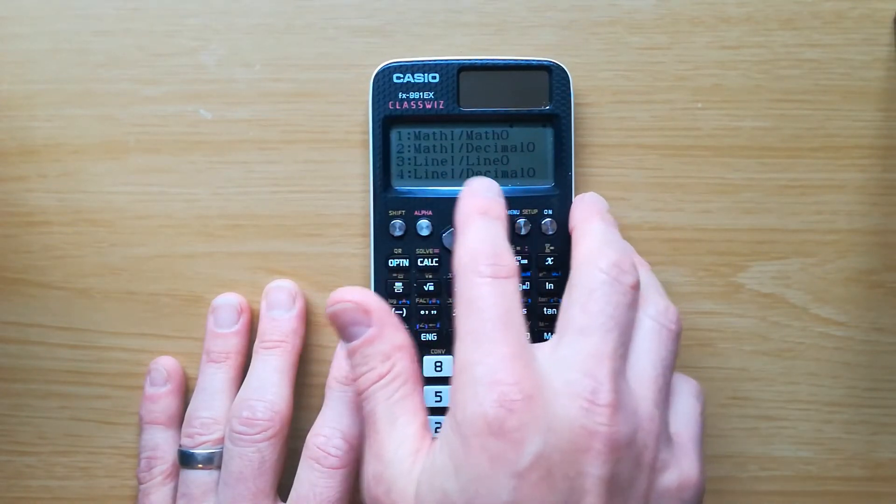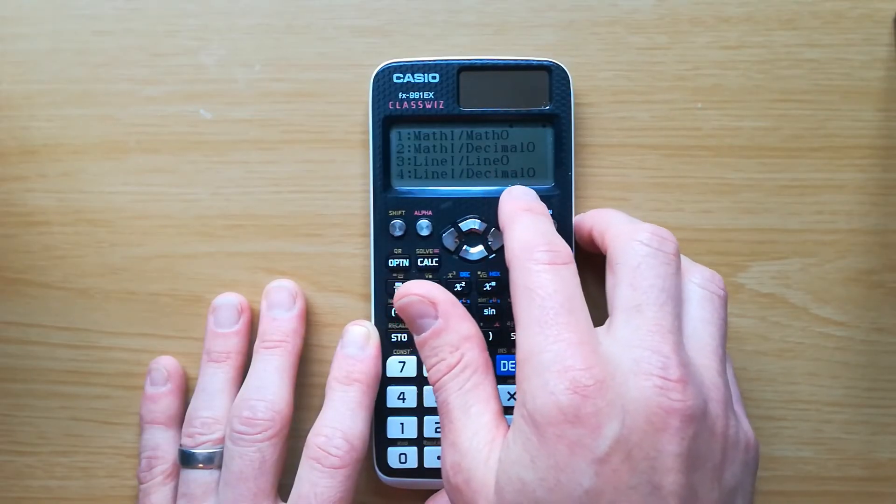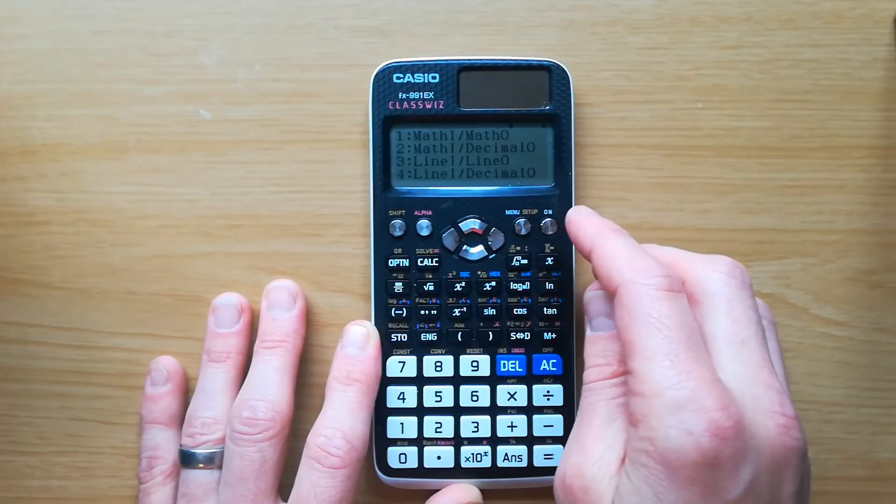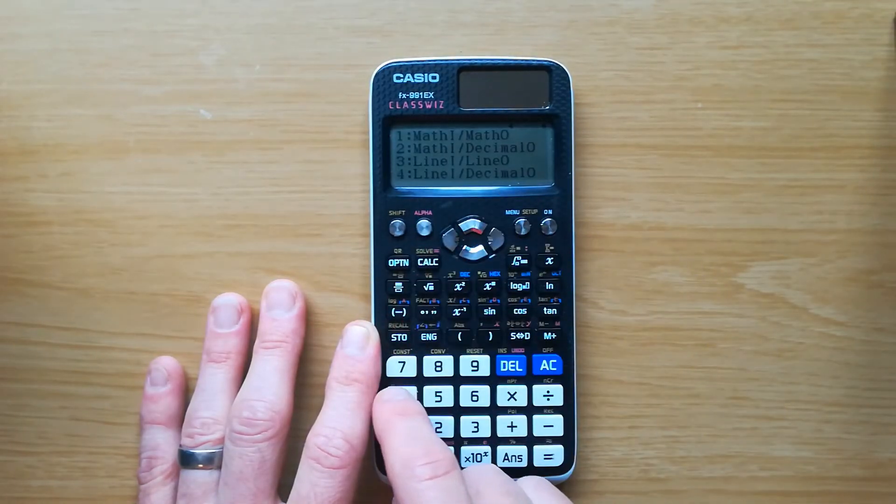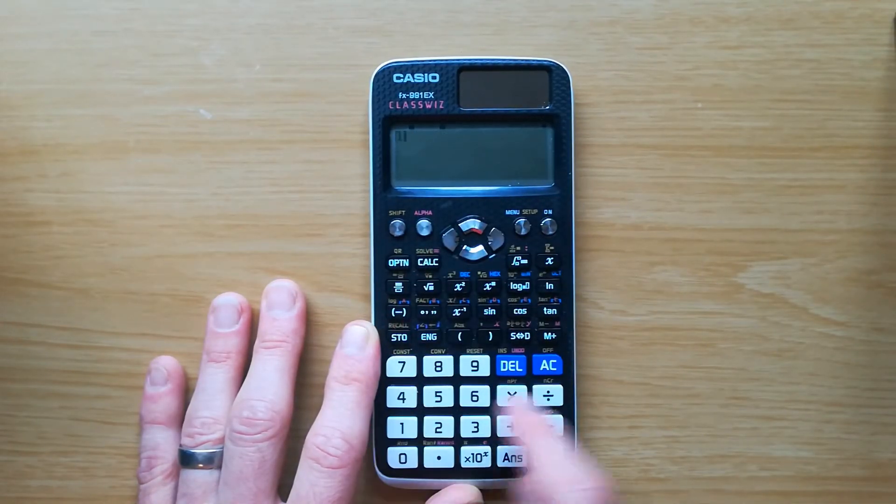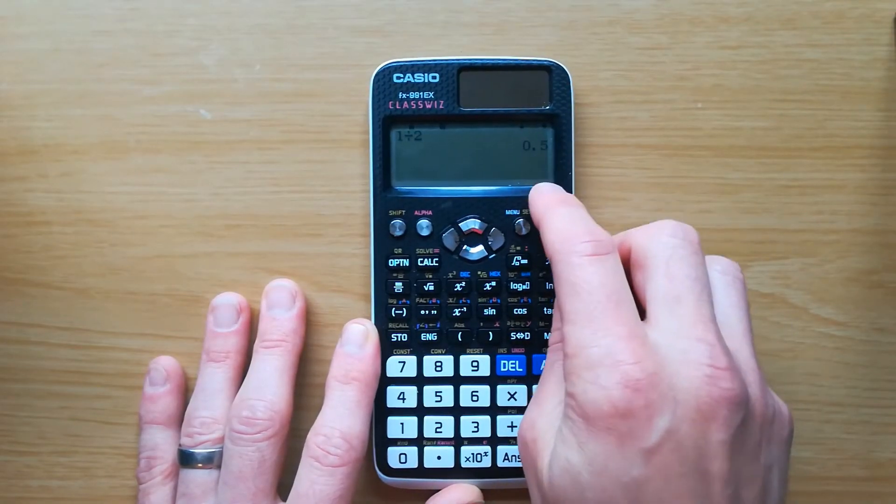Now these two, where we've got line in line out or decimal out, what these are doing is they're similar to the first two, but they show you a history of your calculations. So if I pick number four, so this is going to give me my answer as a decimal, okay, but instead of being at the bottom of the screen it's put it up here.